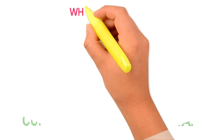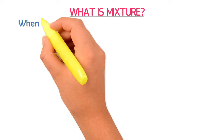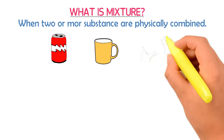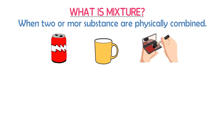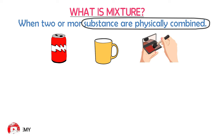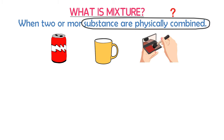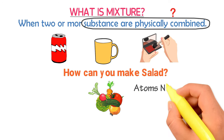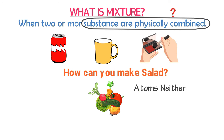Finally, what is a mixture? When two or more substances are physically combined together, we call it a mixture. For example, cold drinks, tea, dyes, etc. In the definition, substances are physically combined together. What is meant by physical combination? Consider how you mix a salad — you simply mix the vegetables together. The atoms of the vegetables neither lose nor gain electrons. This simple combination is termed physical combination.